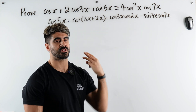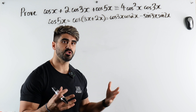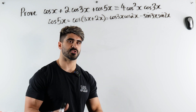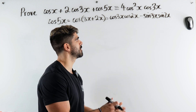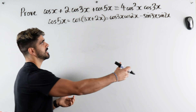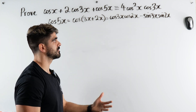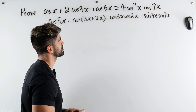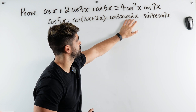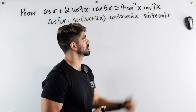cos2x has three different double angle identities. The first one is the original: cos²x − sin²x. The other is only in terms of cosine: 2cos²x − 1. And the final one is in terms of sine only: 1 − 2sin²x. Based on the answer, we should choose the one exclusively in terms of cosine. So I'm going to rewrite cos2x as 2cos²x − 1. And cos3x we'll leave for now, since the answer contains cos3x.